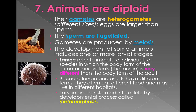Sometimes there are larval stages as animals develop. Larvae are immature individuals with a body form very different from their adult form. Because of this, larvae and adults will eat different foods and may even live in different locations. When larvae are transformed into adults, it's by a process called metamorphosis.